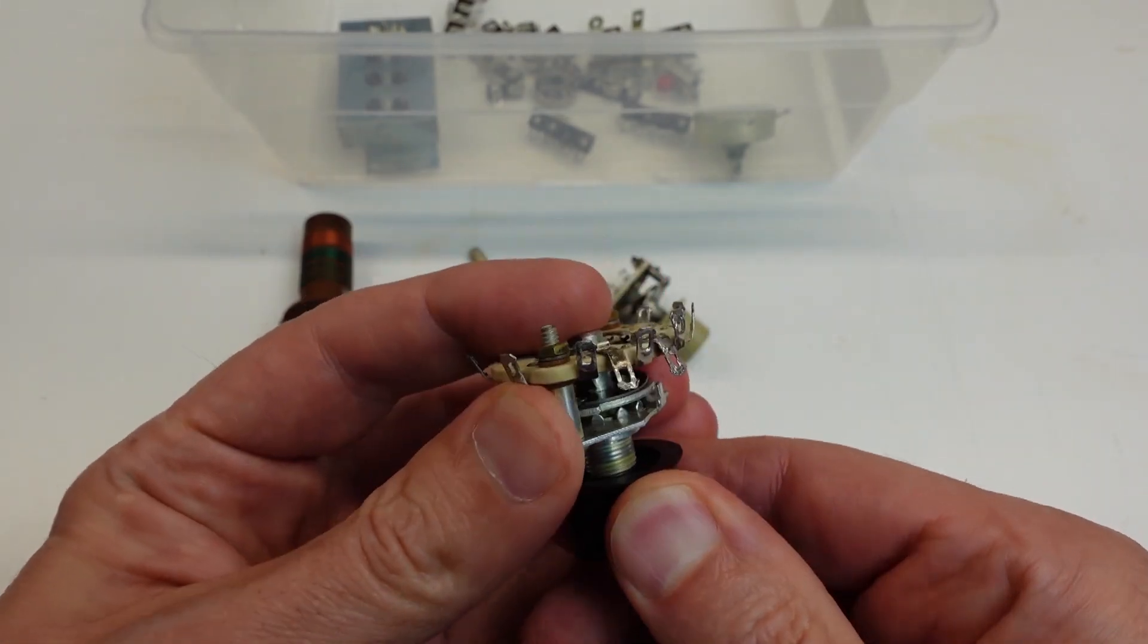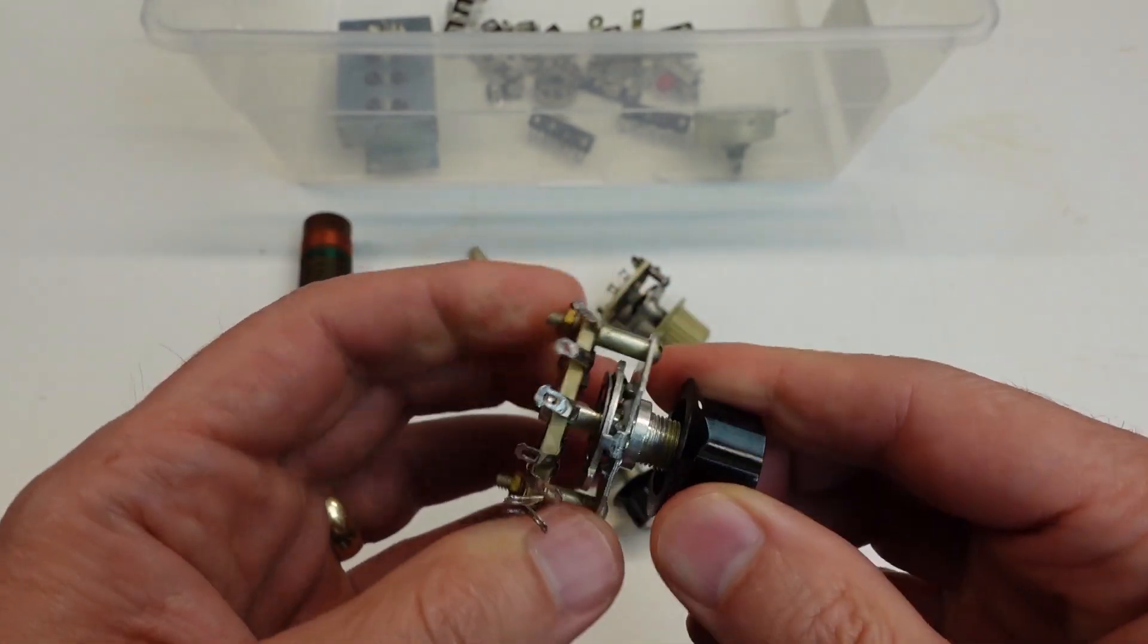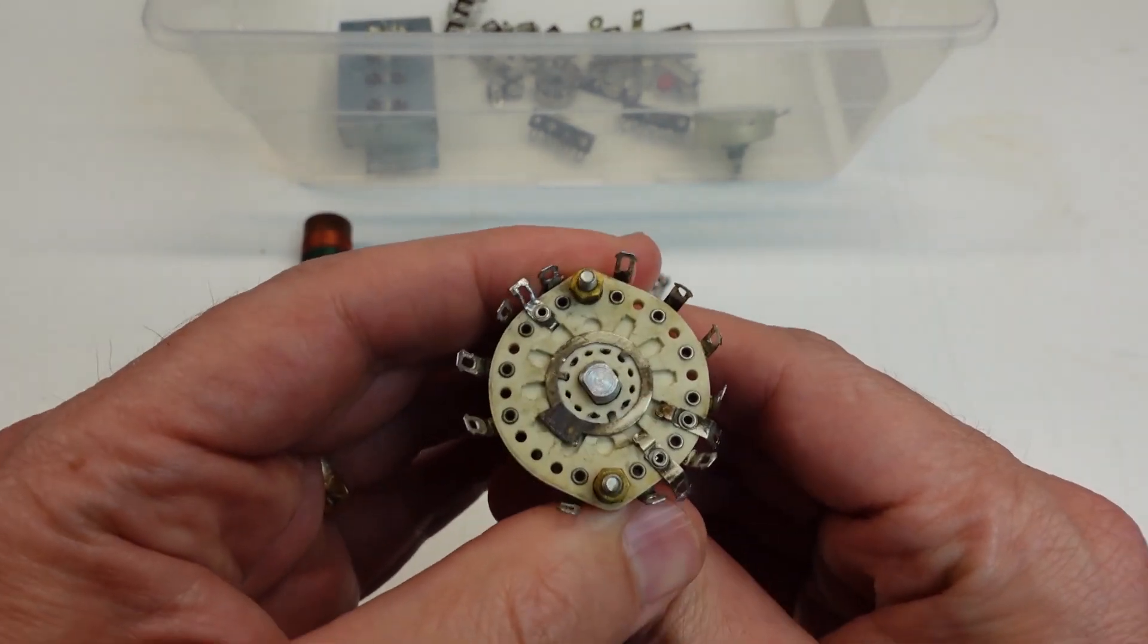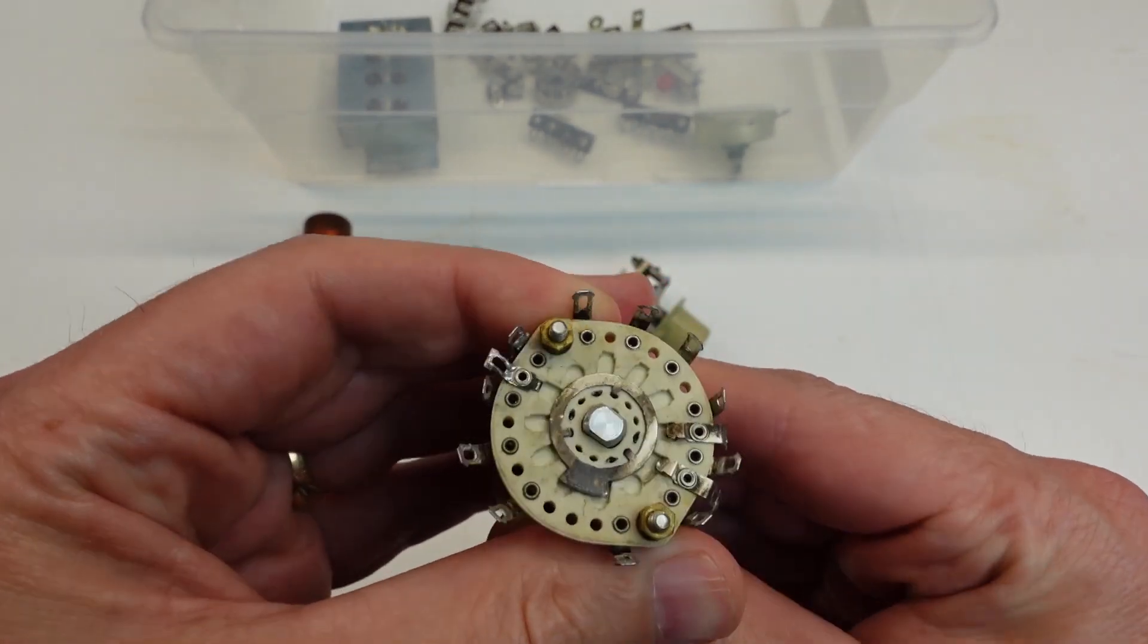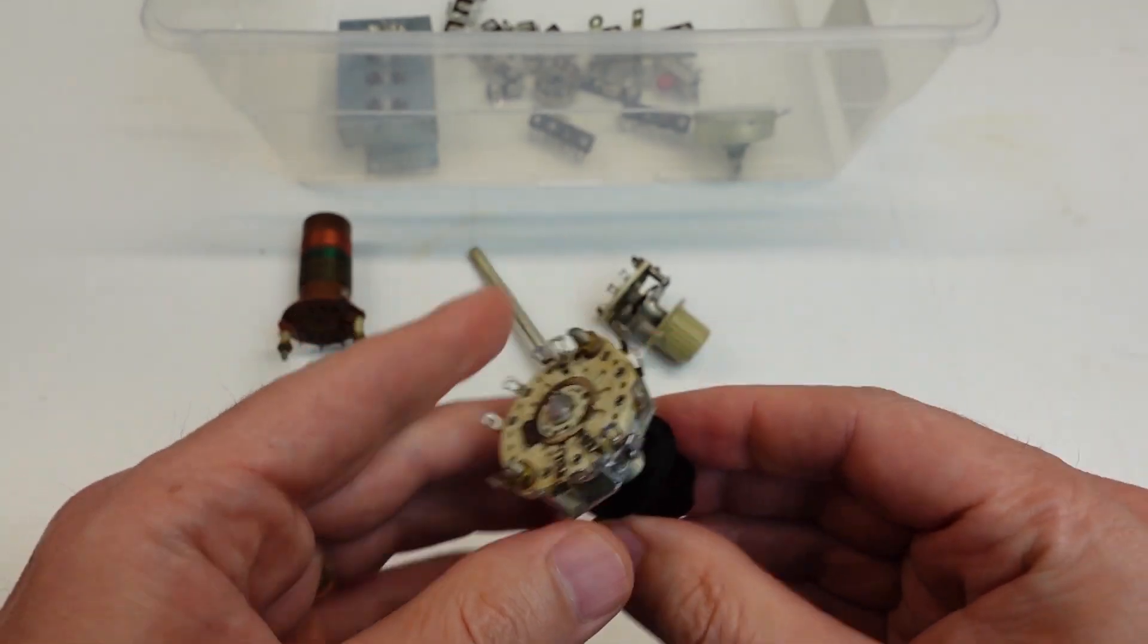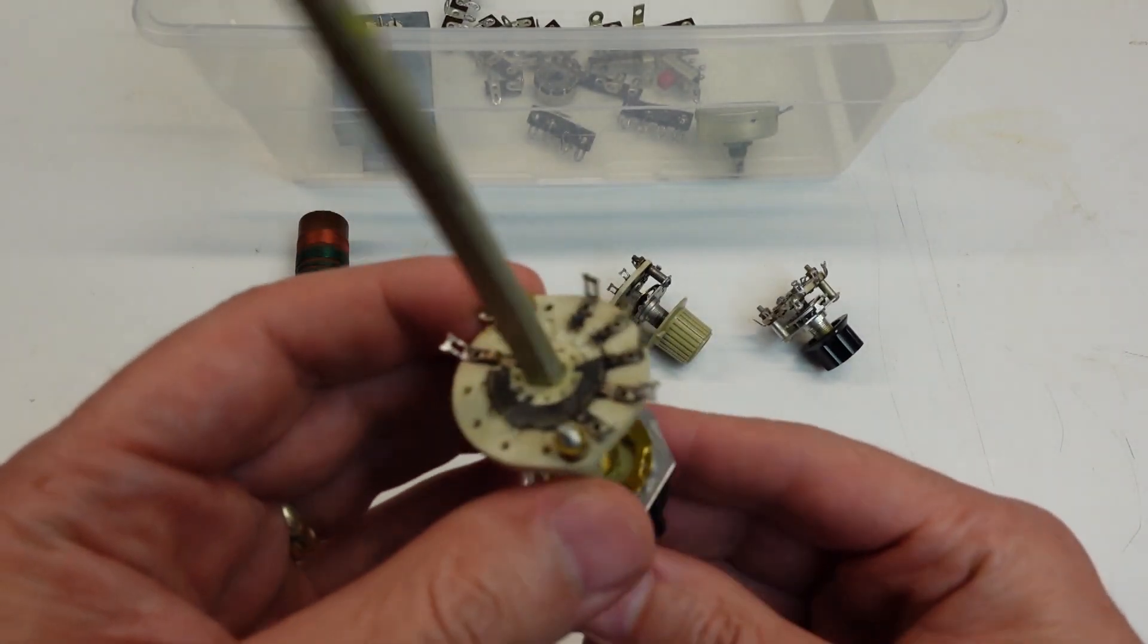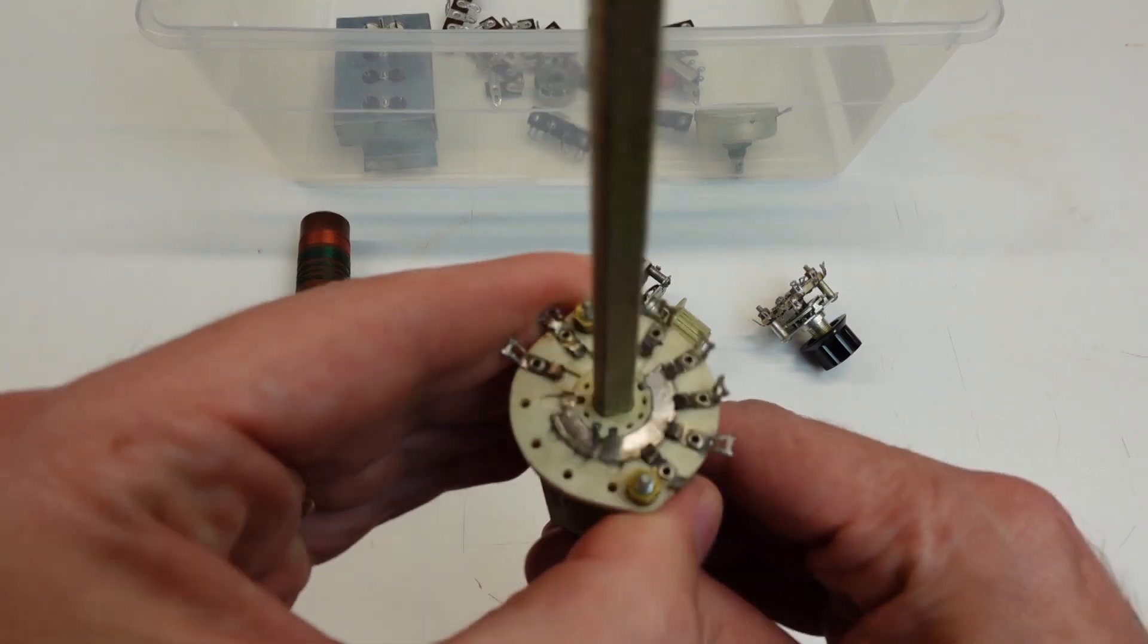I did also put a bit of grease on the detents and a drop of machine oil between the shaft and the bushing. Along with a light cleaning of the contact surfaces, this crystal select switch is ready to rock and roll again. I also use these same techniques on the band switch and it too is all good now.